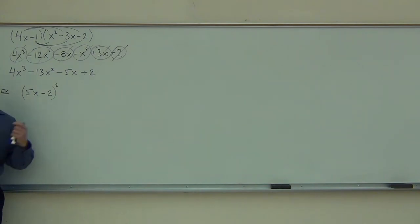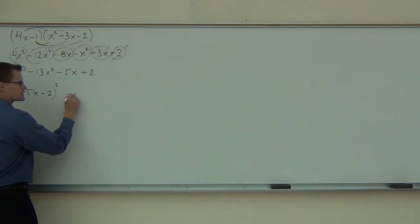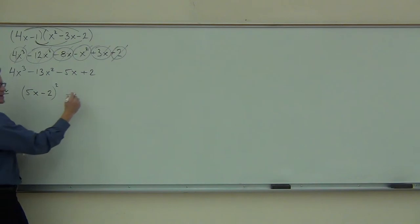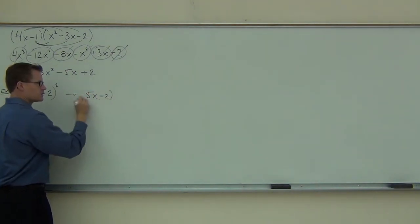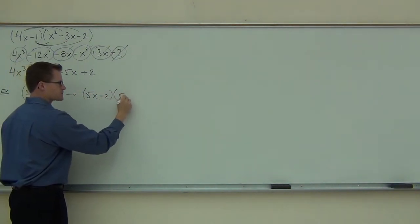So that square says we do have a multiplication problem here, but what it really is, it's not just the 5x times the 5x, it's the 5x minus 2 times an entire other 5x minus 2.